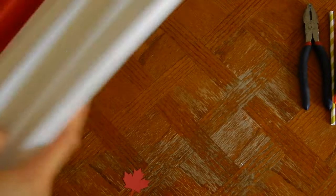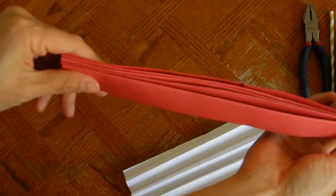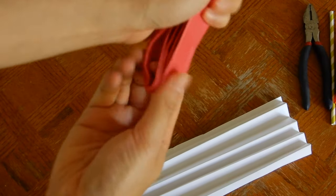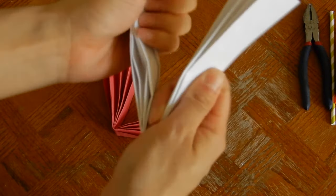So once you've done that twice and you have all four cardstock papers done, you're just going to fold the accordion papers in half, like so. And we're going to do that for all four papers.